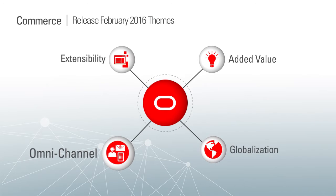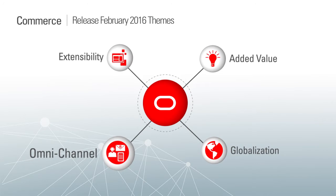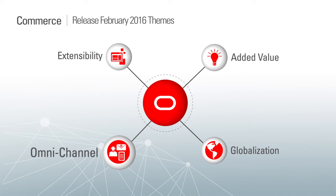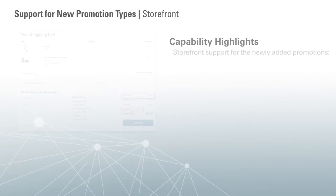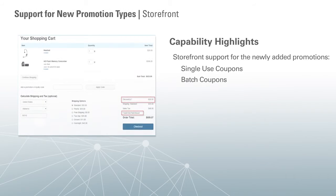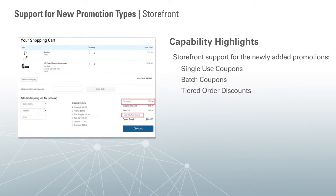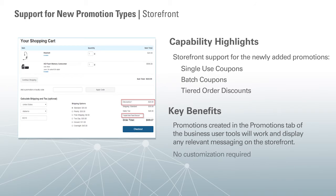Let's move on to Omnichannel. In the February 2016 release, merchants can leverage tiered promotion discounts. An example would be to increase the discount amount as the order value increases, thus enabling ways to entice shoppers to purchase more. Batch coupons are also now available to support large-scale promotion initiatives.